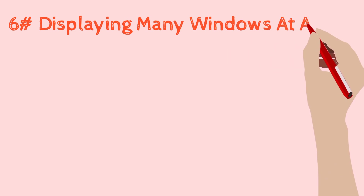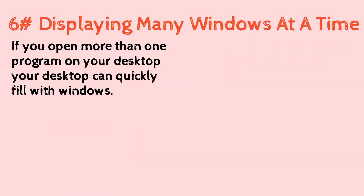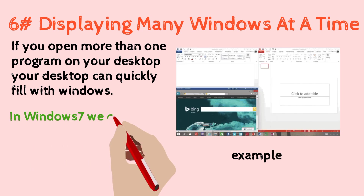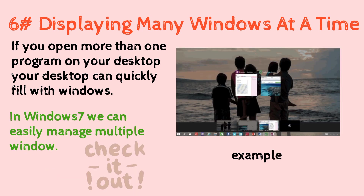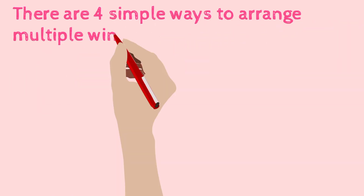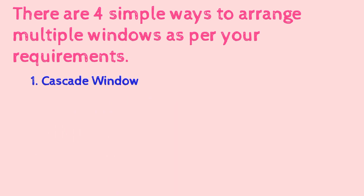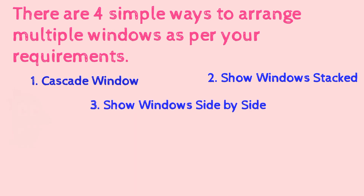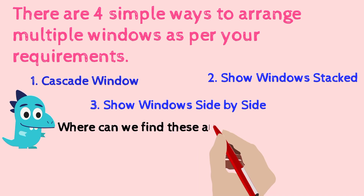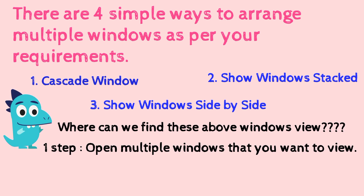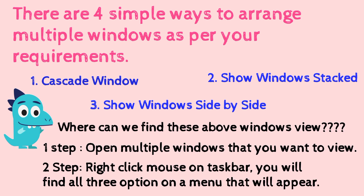The sixth feature is displaying many windows at a time. If more than one program is open on your desktop, it can quickly fill with windows. In Windows 7 we can easily manage multiple windows. There are four simple ways to arrange them: cascade view, show windows stacked, and show windows side by side. To access these options, open the multiple windows you want to view, then right-click on the taskbar and you will find all the views in the menu.